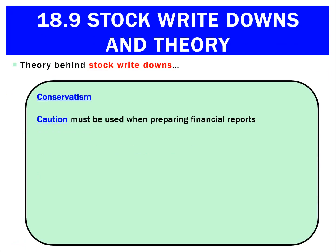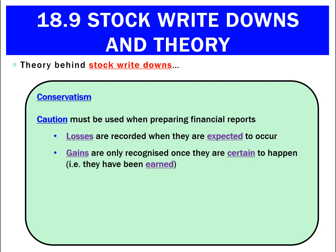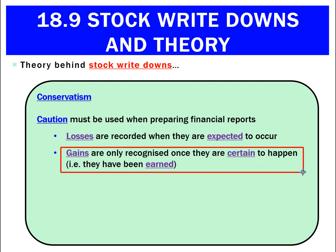What theory tells us to do that? One theory is conservatism. It says use caution when preparing financial reports, and for us that basically meant recognize the loss when expected. The part about gains — we're not going to use that. That's not something we need to talk about when discussing stock write-downs because we don't have a gain; we've got the opposite. When answering this question, we don't want to say anything about gains. This is all to do with recognizing expected loss.